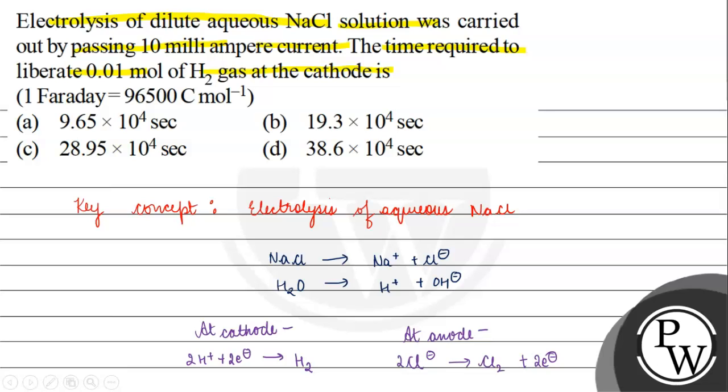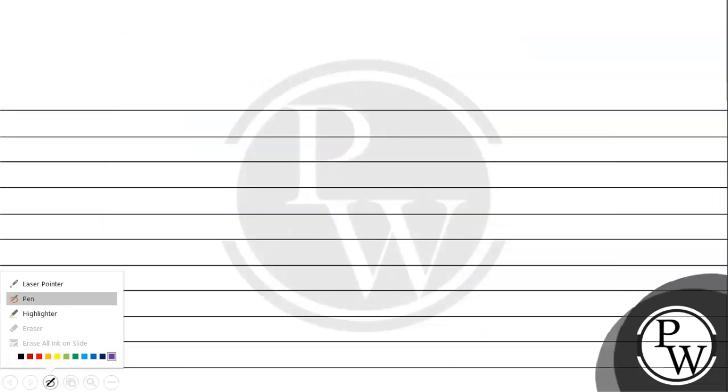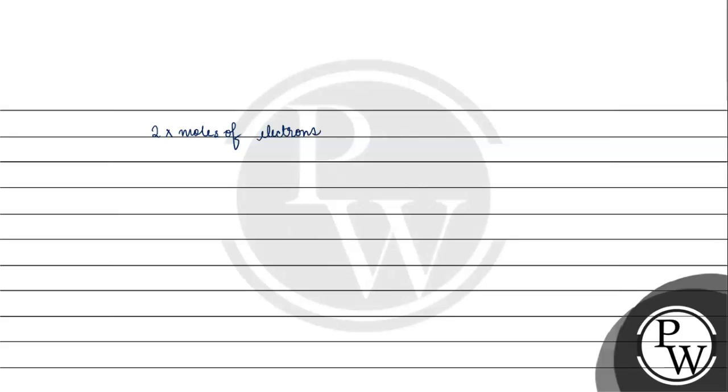Now we have how many electrons are involved in our process. We are asked how much time is required to liberate 0.01 mole of hydrogen gas at the cathode. So let's see: 2 moles of electrons,